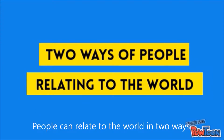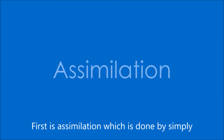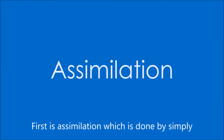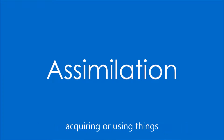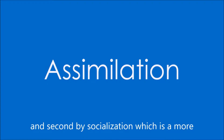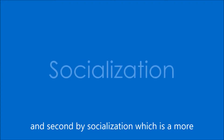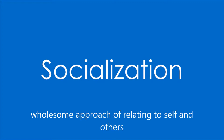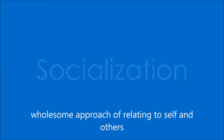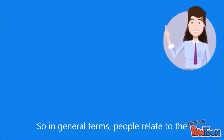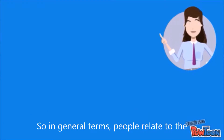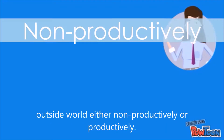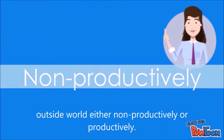People can relate to the world in two ways: assimilation, which is done by simply acquiring or using things, and by socialization, which is a more wholesome approach of relating to self and others. In general terms, people relate to the outside world either non-productively or productively.